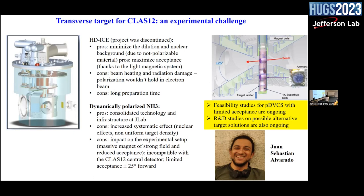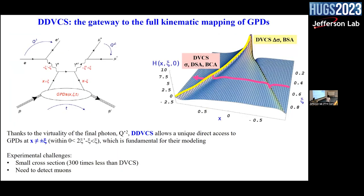In order to understand if this experiment can run, we need to see if DVCS can be measured even with this limited acceptance — in particular without detecting the recoil proton. What Sebastian is doing is trying to see if, by applying machine learning techniques, the background separation from the signal can be achieved even in the e-gamma detection topology. There are also R&D studies on different possible solutions for the target and the magnet. This experiment is really, from my point of view, the missing piece to have the full picture at least for proton DVCS.